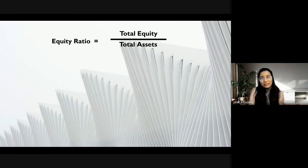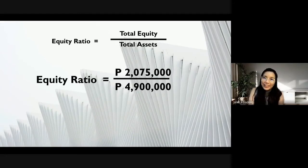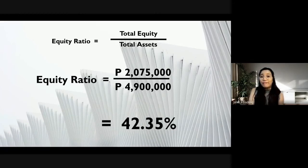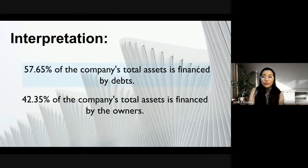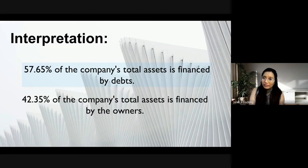Now solving for the equity ratio by dividing total equity by total assets: total equity is $2,075,000 and total assets is $4,900,000, giving us 42.35%. Interpreting these results: the 57.65% debt ratio means that 57% of the company's total assets are financed by debt, while the 42.35% equity ratio means that 42.35% of the company's total assets are financed by the owners or stockholders.